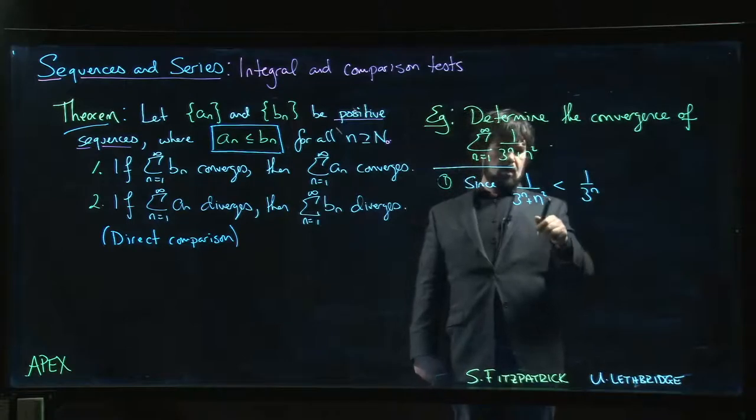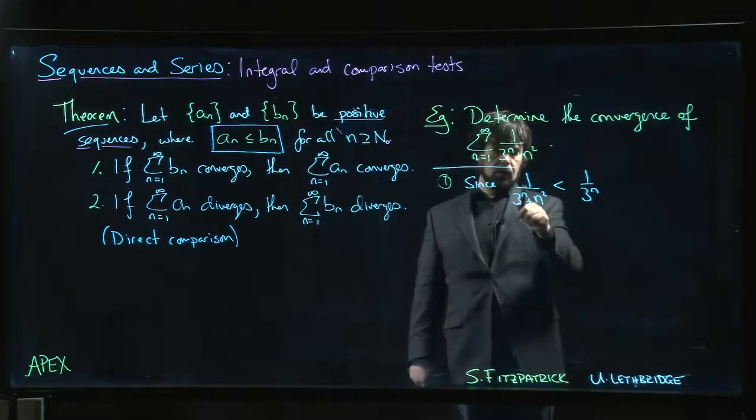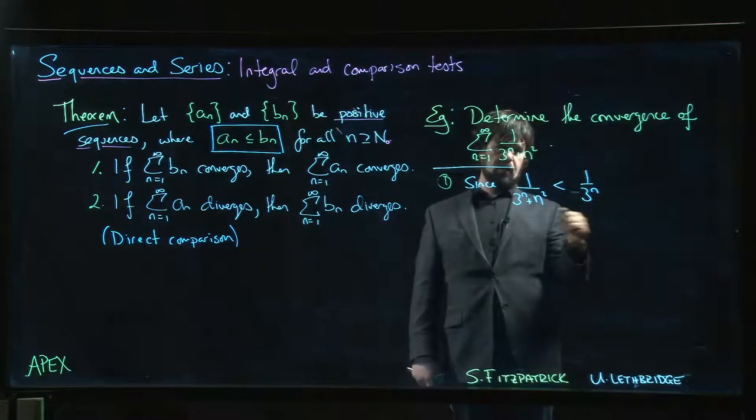Well, whatever n is, n squared is a positive number. If you add a positive number on the denominator, you're making the denominator bigger. That makes the whole thing smaller. So this should be a larger number over here.